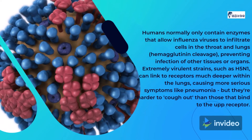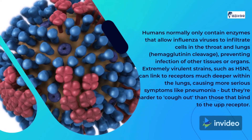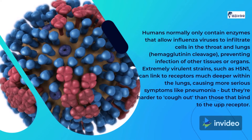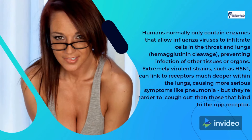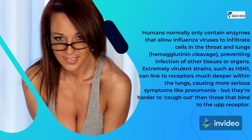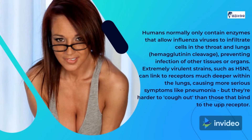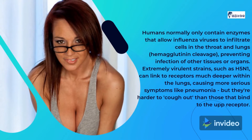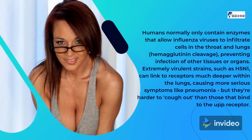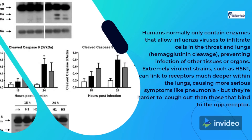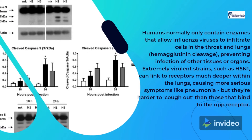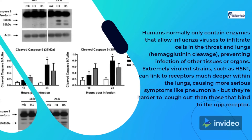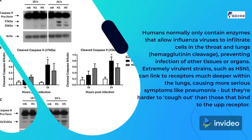Humans normally only contain enzymes that allow influenza viruses to infiltrate cells in the throat and lungs — hemagglutinin cleavage — preventing infection of other tissues or organs. Extremely virulent strains, such as H5N1, can bind to receptors much deeper within the lungs, causing more serious symptoms like pneumonia, but they are harder to cough out than those that bind to the upper receptor.